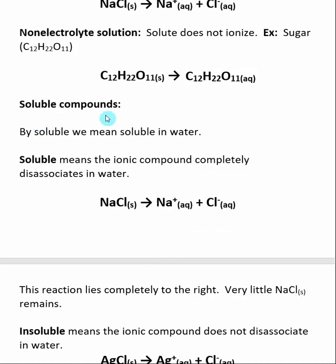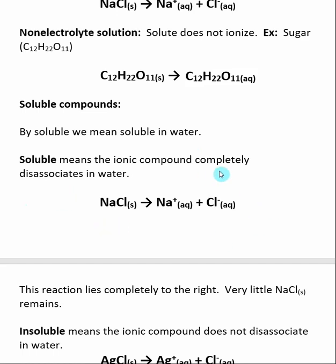When we say soluble compounds, we are discussing whether something is soluble in water specifically. There are many different solvents, but for this section we are talking about solubility in water. If an ionic compound is deemed to be soluble in water, it means that it dissociates virtually completely when it's added to water.